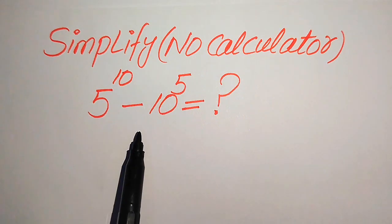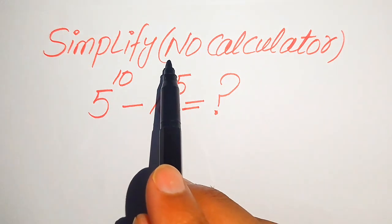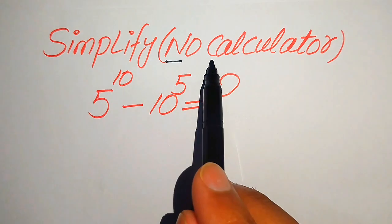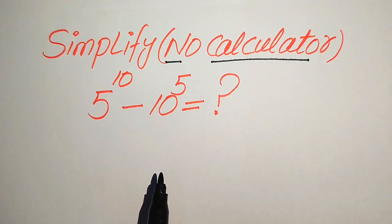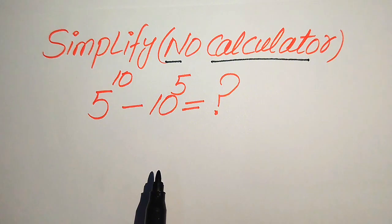We write this algebraic expression into the lowest form, but remember one thing: a calculator is not allowed in this problem. It means that we need to show all of the working on this paper.